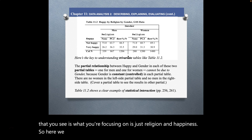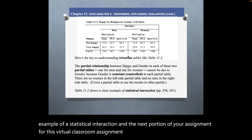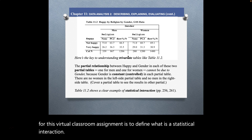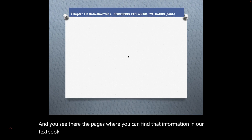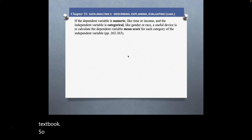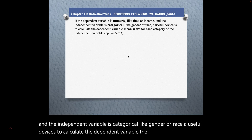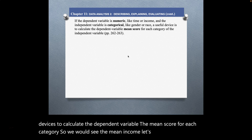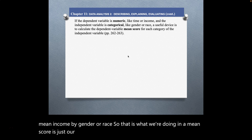This is an example of a statistical interaction. The next portion of your virtual classroom assignment is to define what a statistical interaction is — you can find that information at the referenced pages in our textbook. If the dependent variable is numeric — like time or income — and the independent variable is categorical — like gender or race — a useful device is to calculate the mean score for each category. A mean score is just the average for each category of the independent variable.